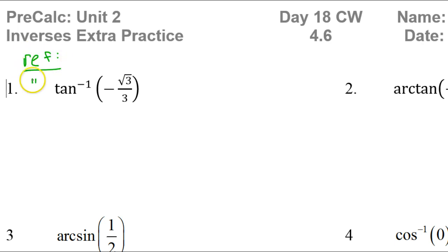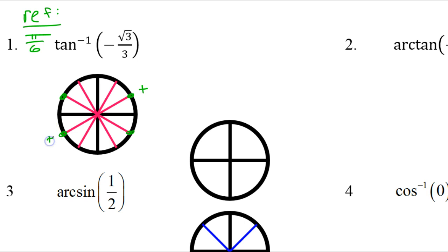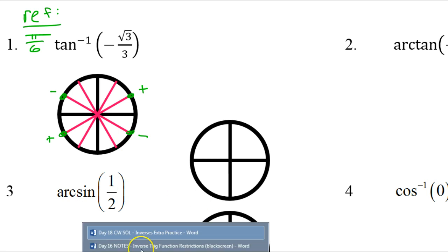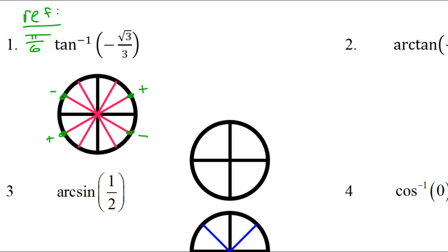Here's the unit circle with the pi over 6's marked. Reference angle of pi over 6 — here are the four angles that have a reference angle of pi over 6. Tangent is positive in the first and in the third quadrant. Tangent is negative in the second and in the fourth quadrant. Inverse tangent is only defined on the right-hand side of the unit circle.